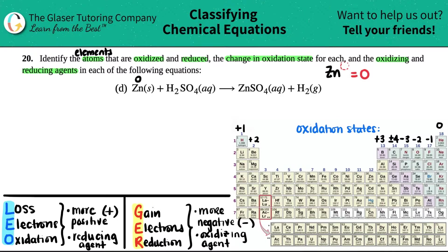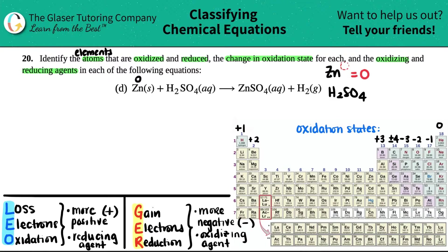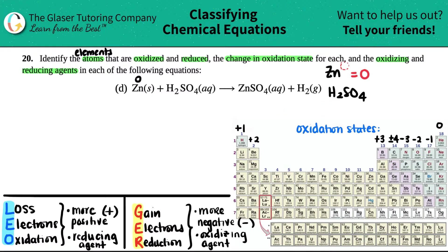Now we have to find the individual charges of H, S, and O in H₂SO₄. I'm going to use the method where I know two of the charges already and solve for the other one. Hydrogen wants to be a +1, especially when it's only with nonmetals — and sulfur and oxygen are nonmetals, so hydrogen is going to be +1. Oxygen, since it's really electronegative, is going to be a −2 charge.